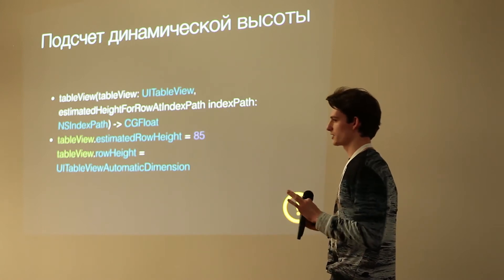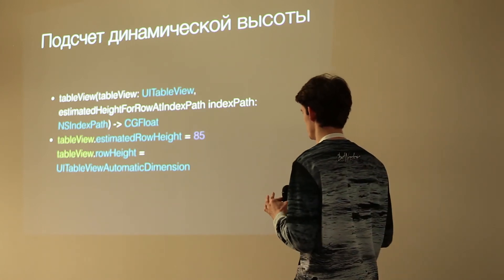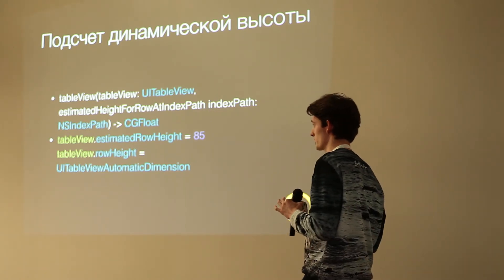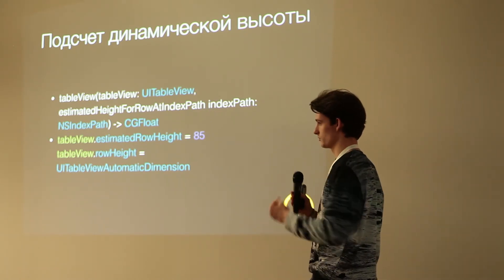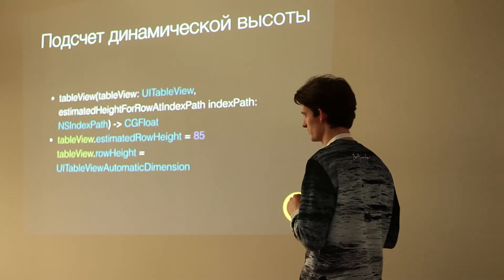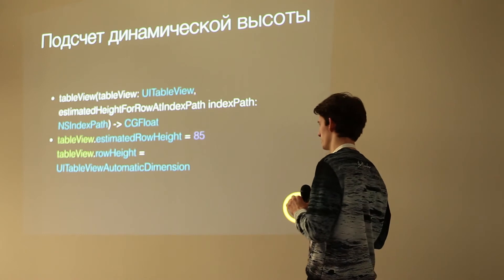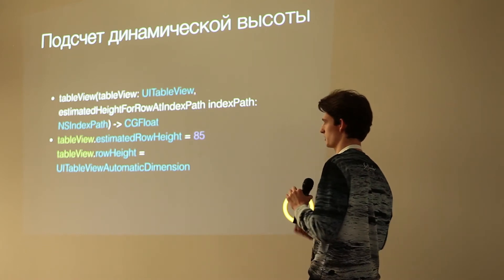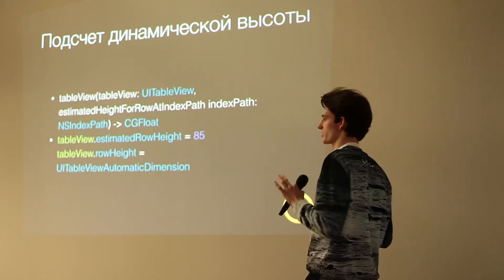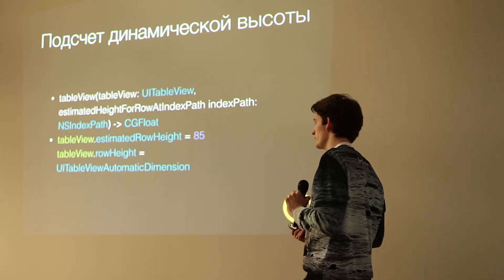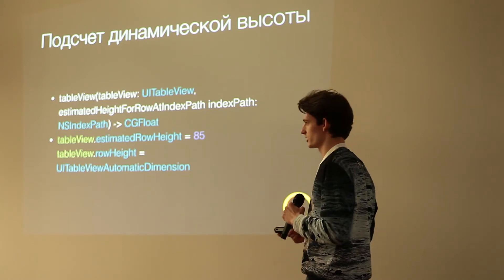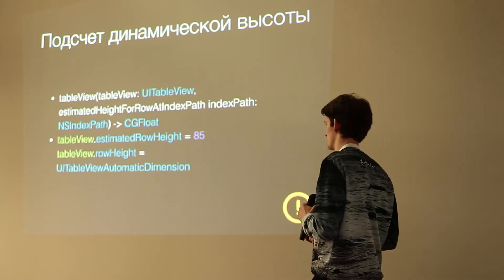Самый тривиальный пример: у нас есть лейбл, который может растягивать контент. Мы прицепляем его ко всем бокам — сверху и снизу — и говорим, что количество строк равно 0, то есть он может растягиваться. 85 — это минимальная высота для меня: лейбл не может быть меньше 85, это по 8 отступ из краёв плюс остаток на сам лейбл. К сожалению, такая штука не будет работать в версиях ниже iOS 8, и придётся считать вручную.